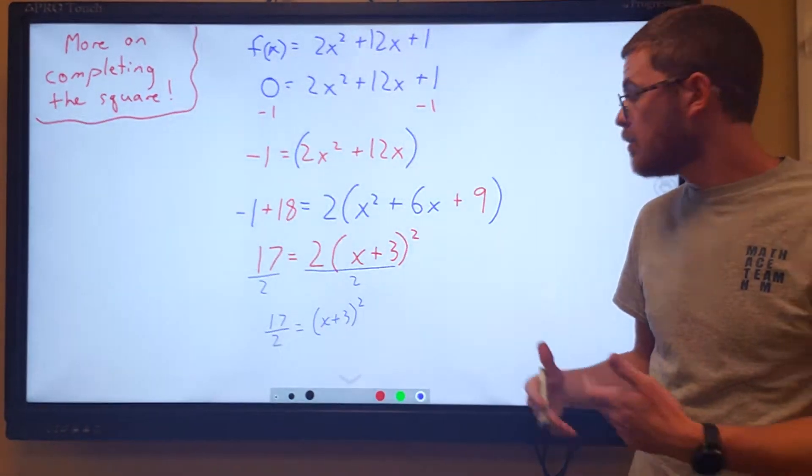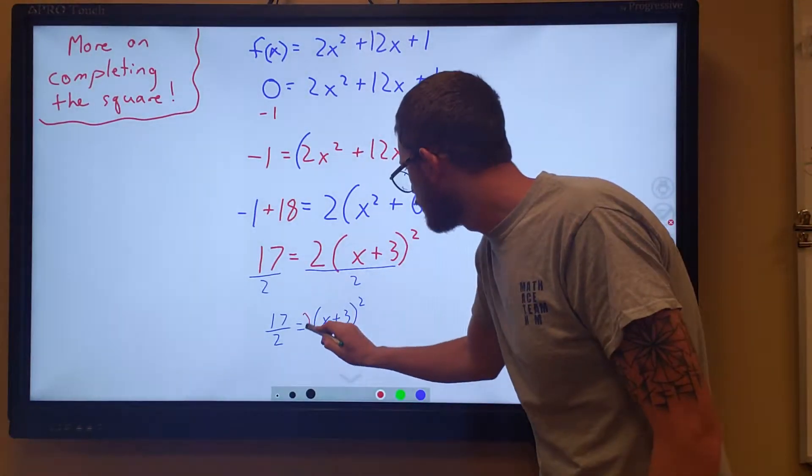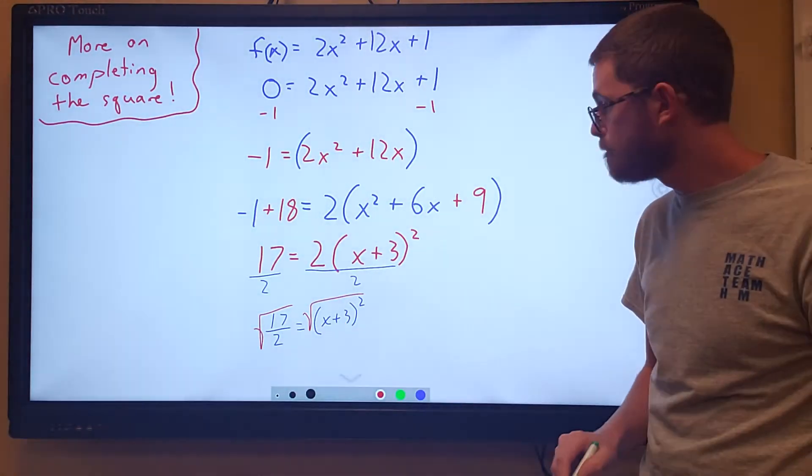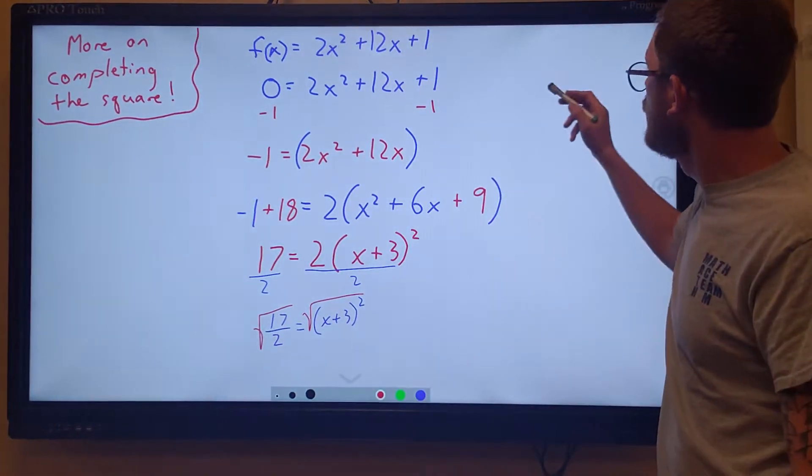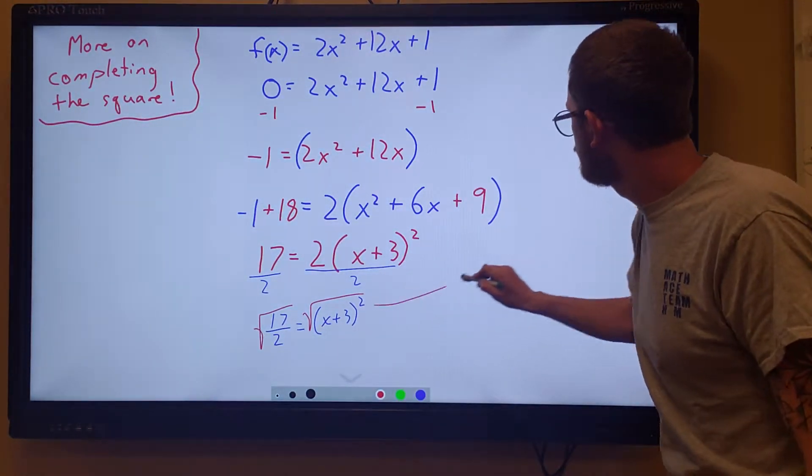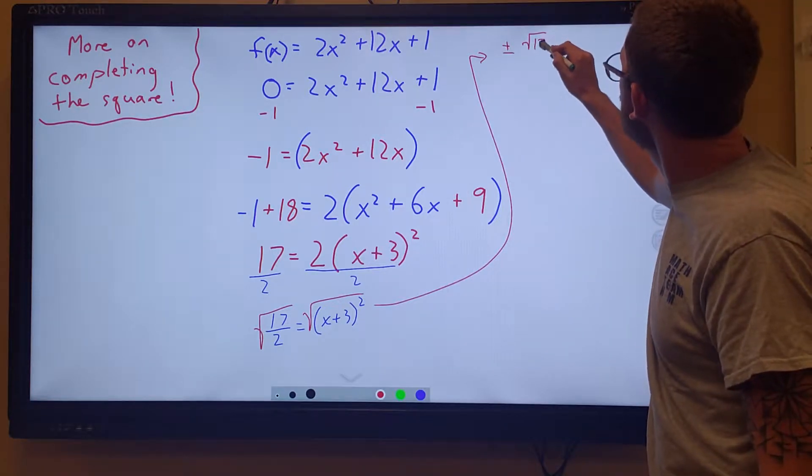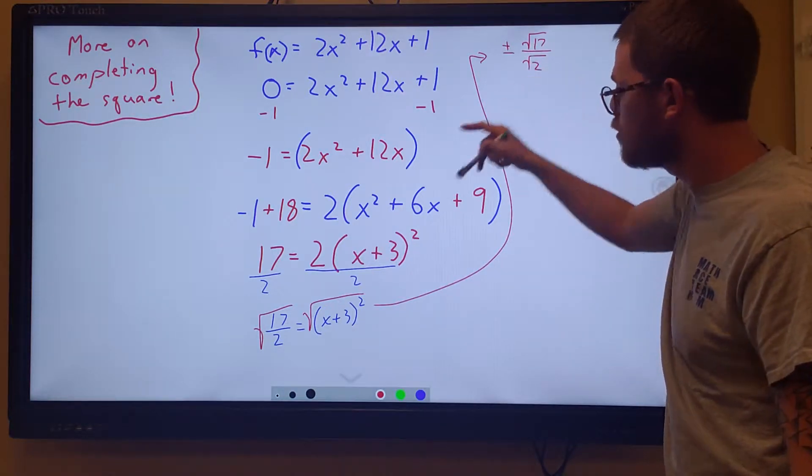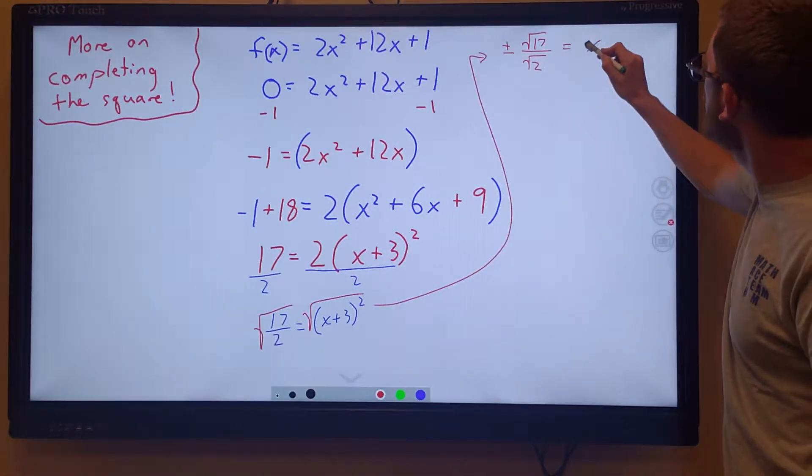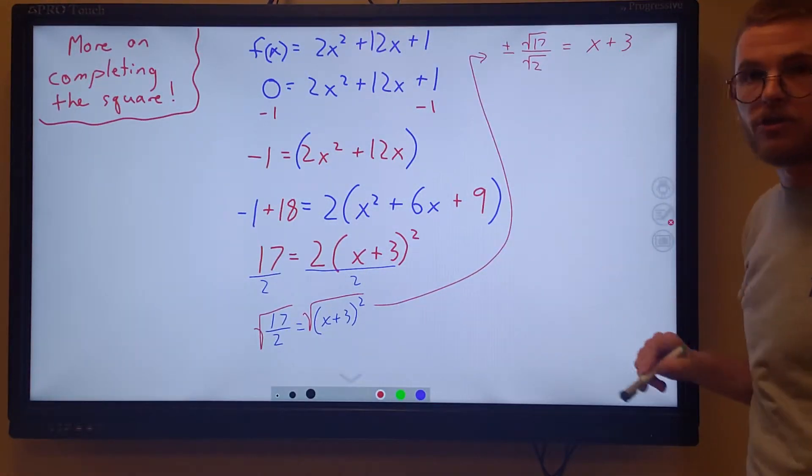In order to undo that being squared, we're going to take the square root of both sides. So we have, I'm going to bring it up here, plus or minus the square root of 17 over the square root of 2. I'm going to break that down right there, equals x plus 3.